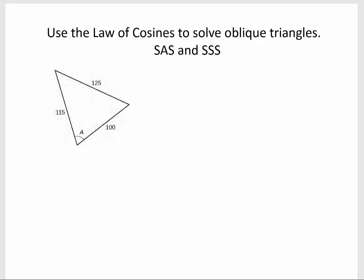In this triangle, I see I just have side, side, side. So I can't use the law of sines because I don't have an angle-side opposite pair. So I'm going to use the law of cosines, and I'm just going to find angle A because in this problem, that's all it asked for.